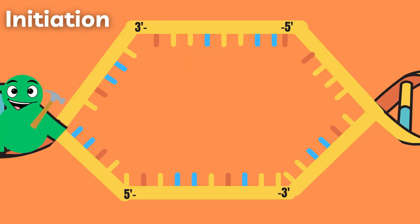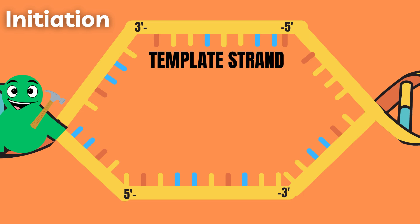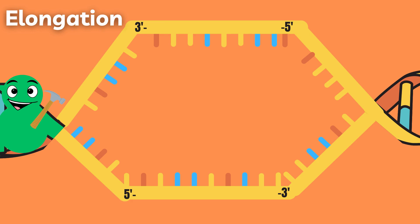The 3' to 5' strand will be the template strand, or antisense strand, meaning that it will be used as a model for creating the new mRNA. This brings us to elongation.